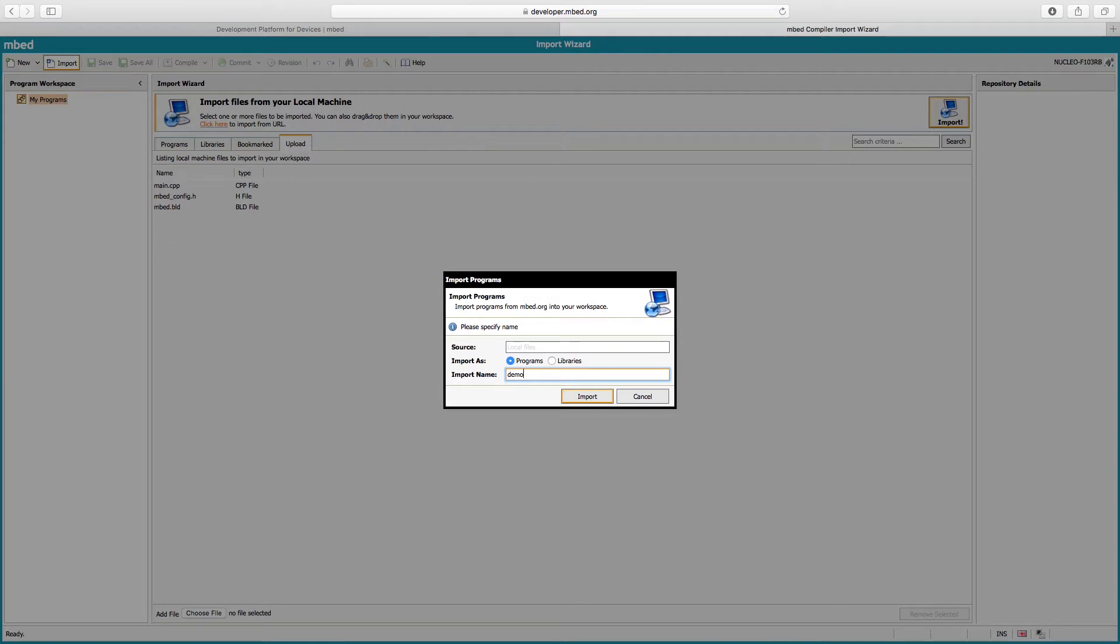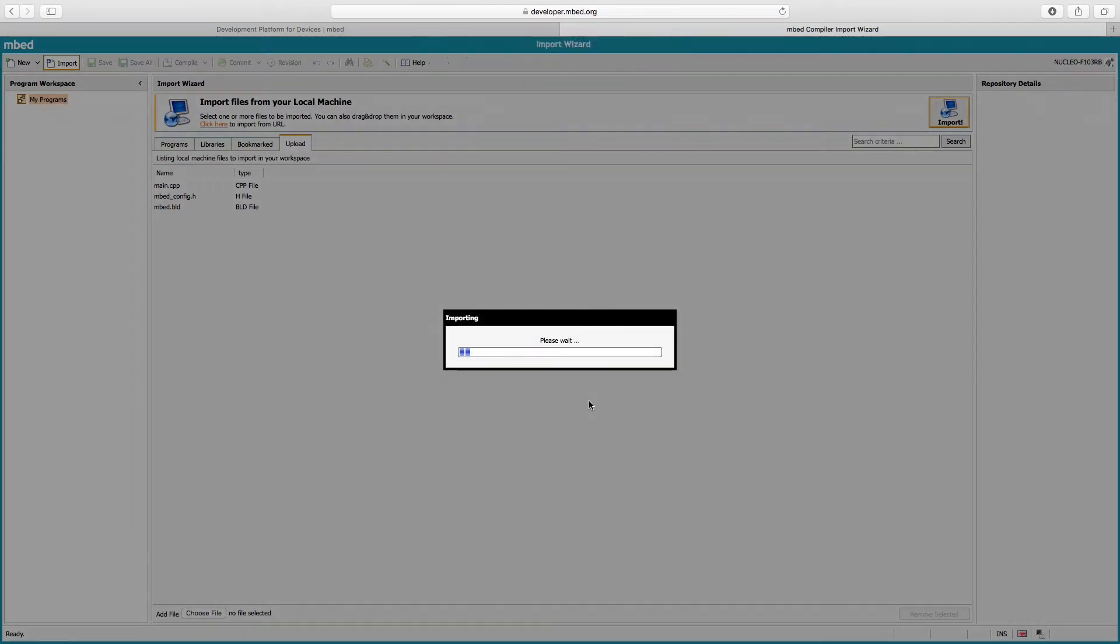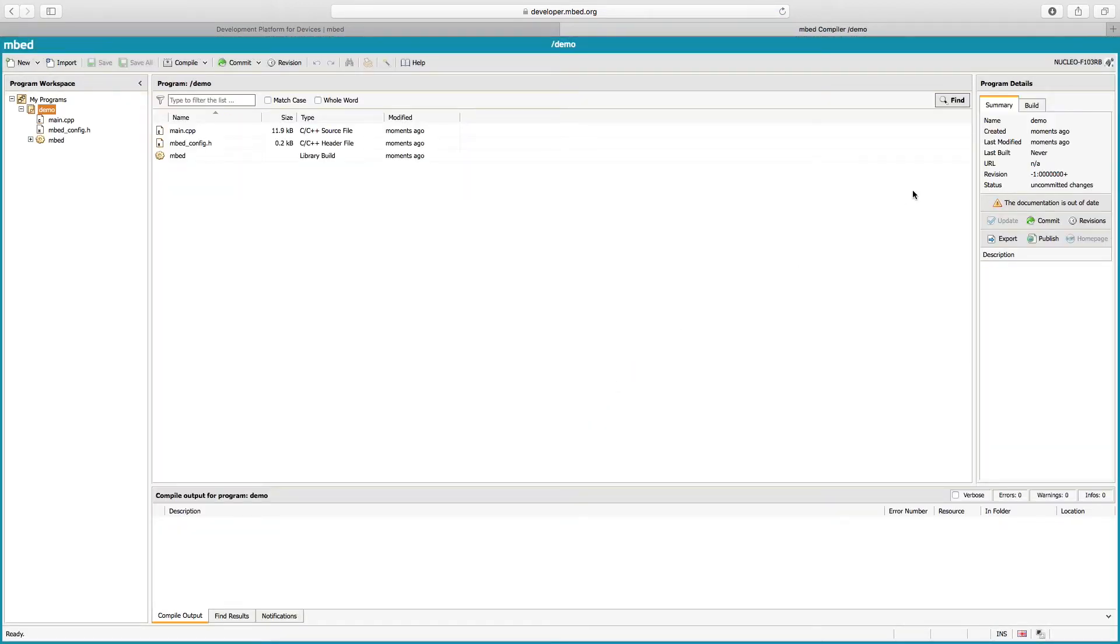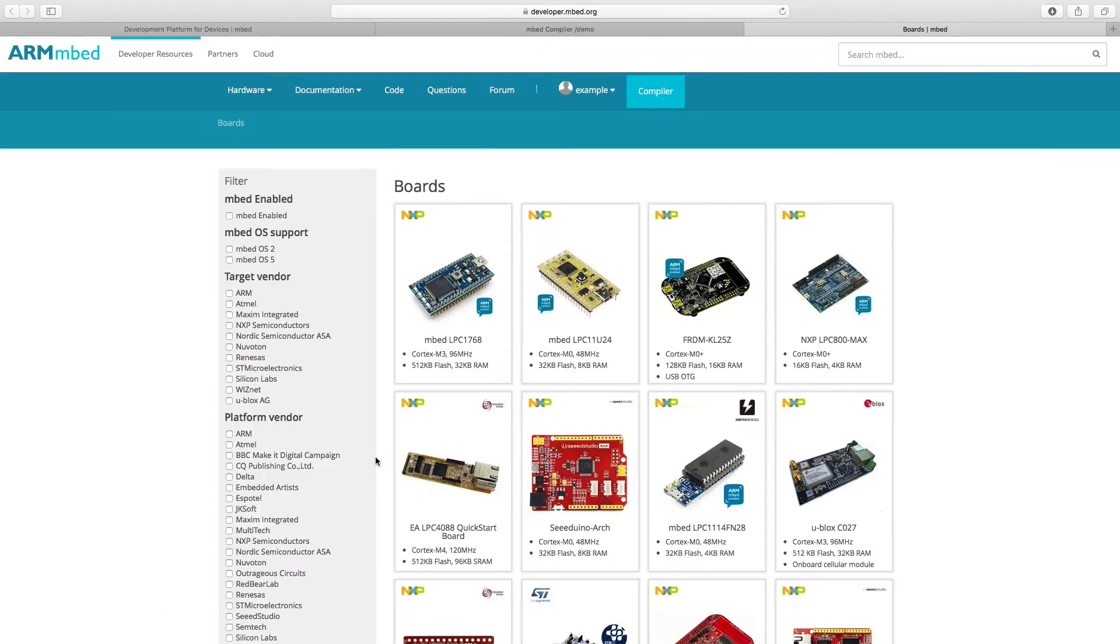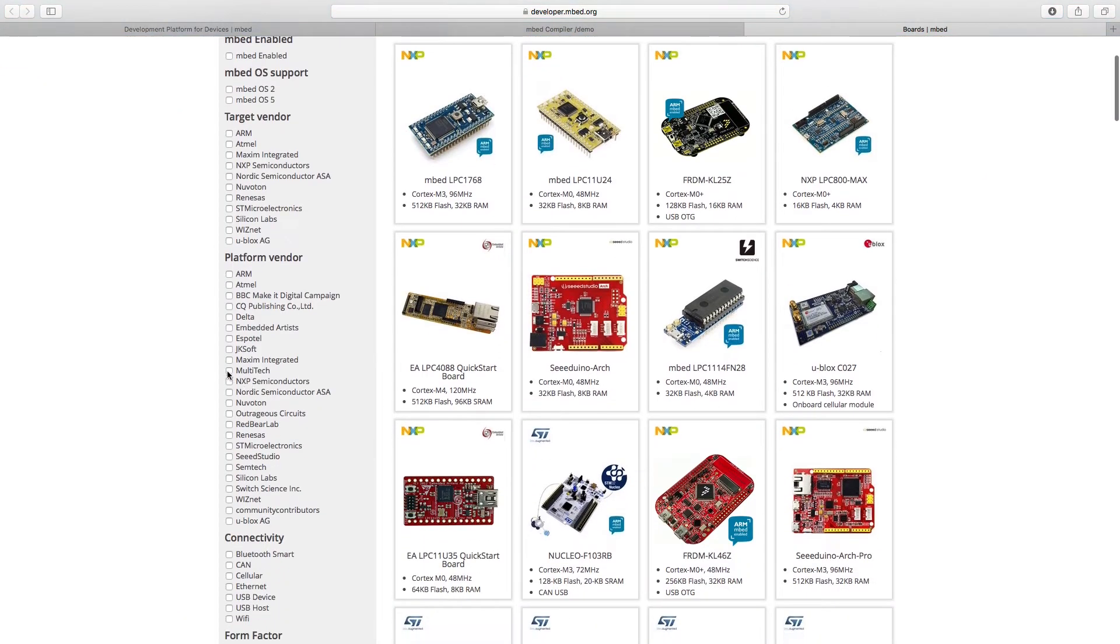If you import the project files, make sure you add the MTSAS and embed libraries to your project. Be sure to select the MTS Dragonfly as a target platform in the upper right corner of the embed compiler window.